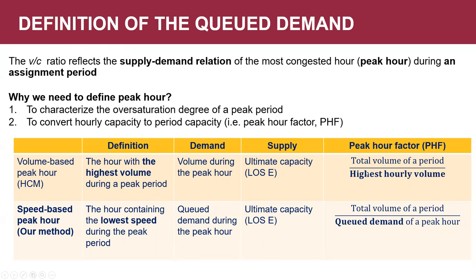From the supply side, we still use the ultimate capacity, that is level of service E, to describe the supply of the peak hour. However, we use a different definition for demand. In our paper, demand is described using Q-demand instead of the maximum volume during the peak period. This difference also leads to a different definition of the peak hour factor used to convert hourly capacities to period capacities.